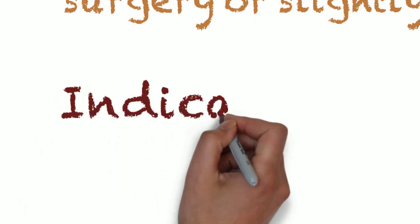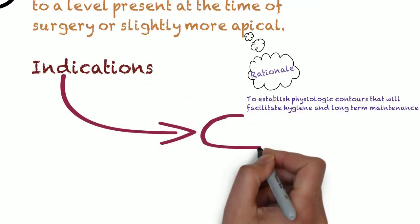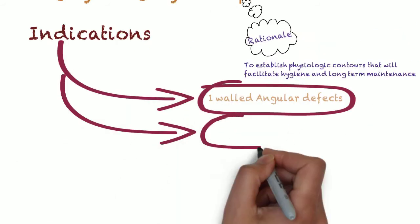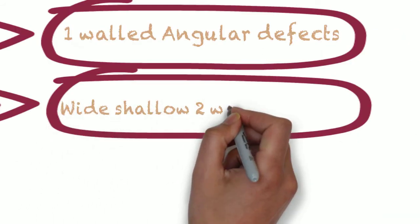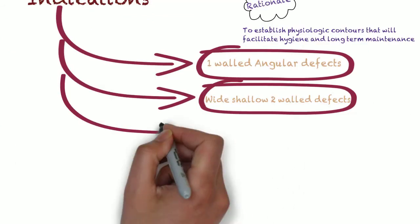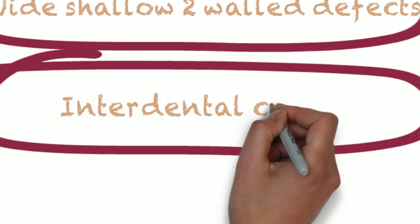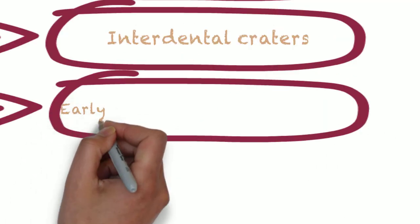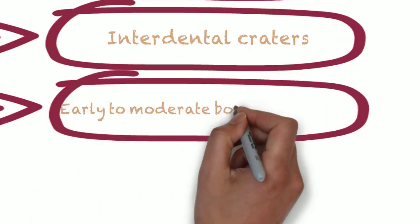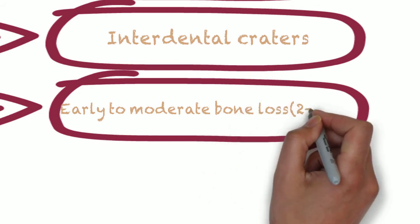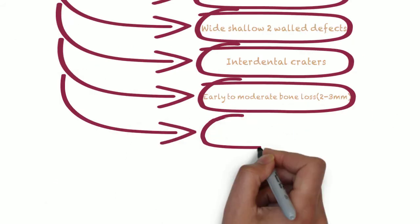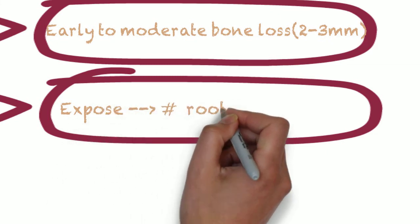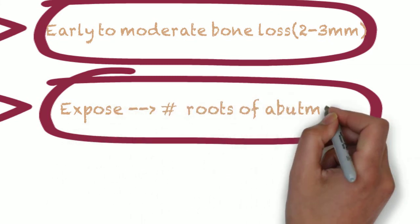The various indications for resective osseous surgery include one-wall angular defects, wide shallow two-wall defects, interdental craters, early to moderate bone loss of two to three millimeters in teeth with moderate length root trunks, and exposure of fractured roots of abutments for easy removal.